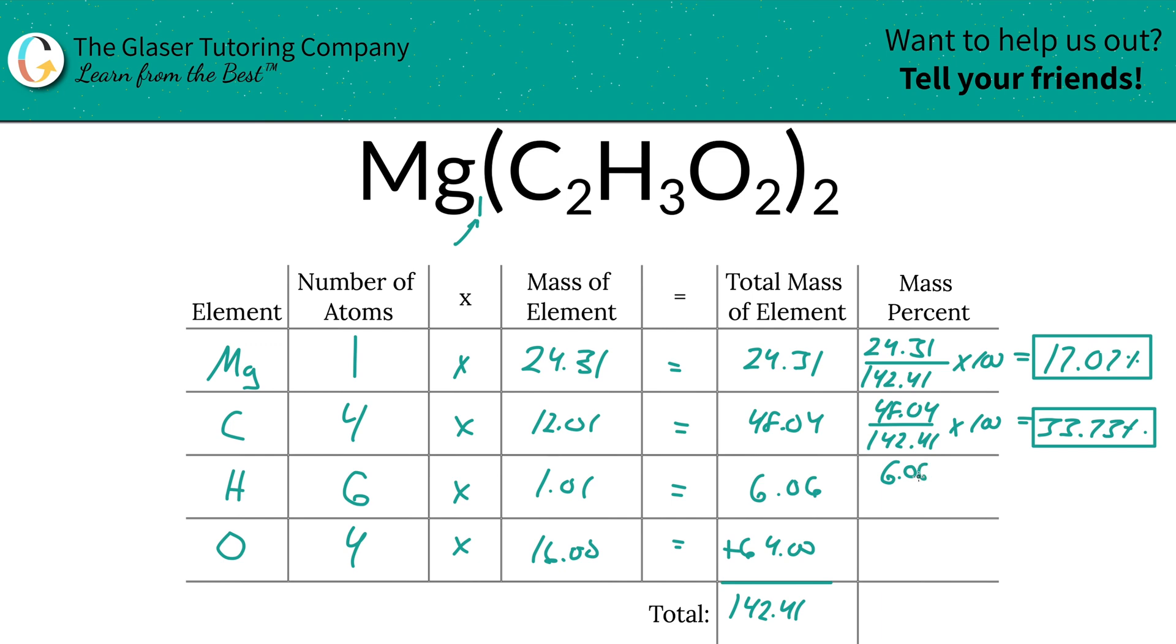Next, hydrogen. Total of hydrogen, 6.06, divided by the 142.41. You see how repetitive this gets? That's actually a good thing. You want it to become repetitive. That means you're doing enough practice. If it's not so repetitive and routine and you're like, oh my God, this is so boring now, I know how to do this, you're not practicing enough.